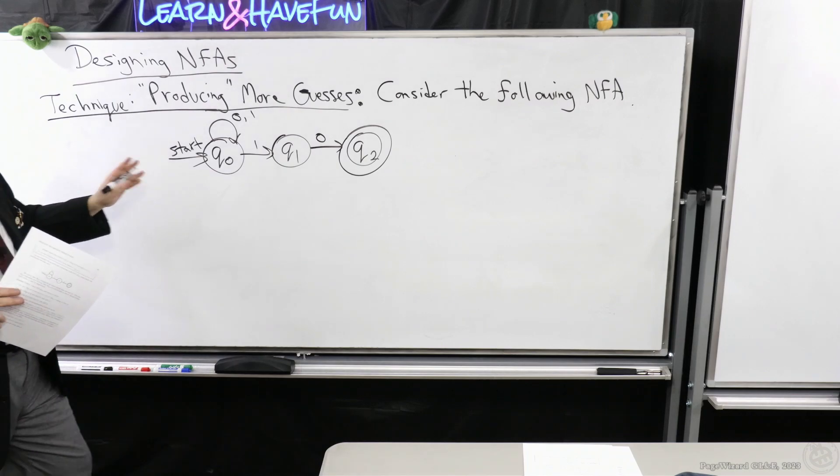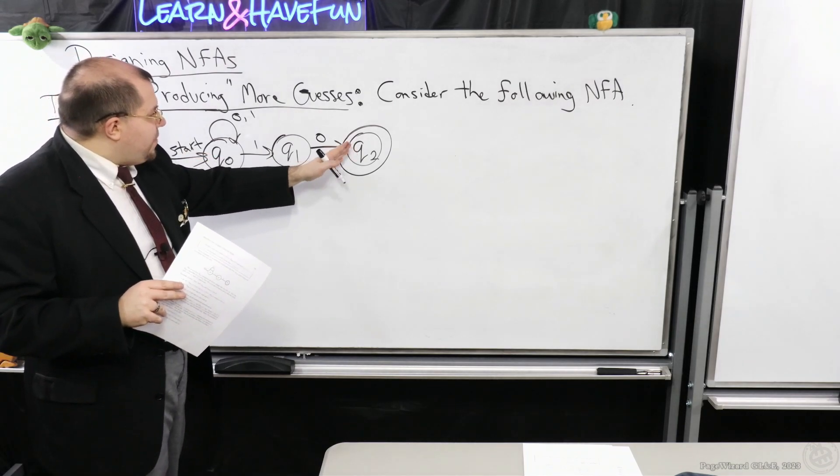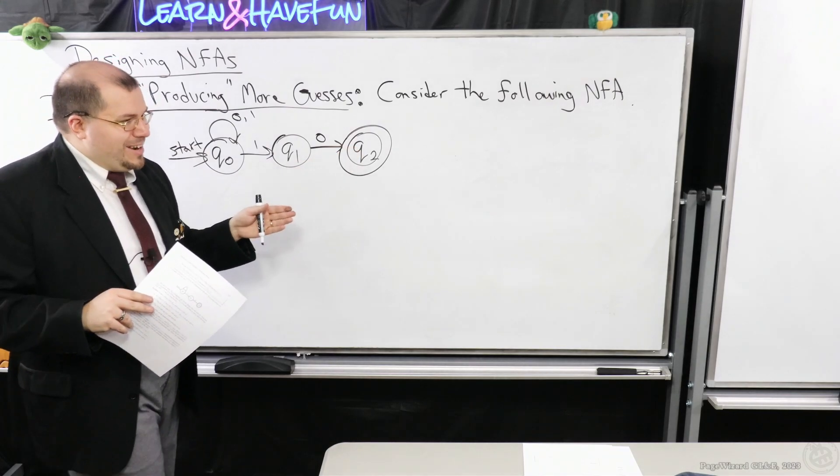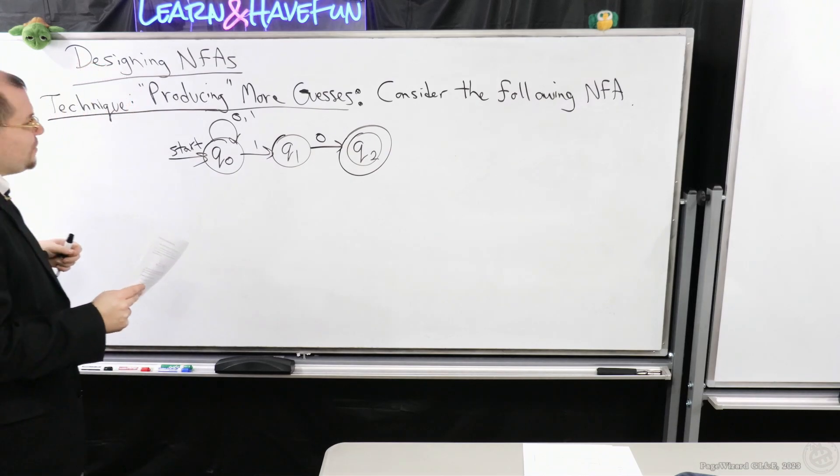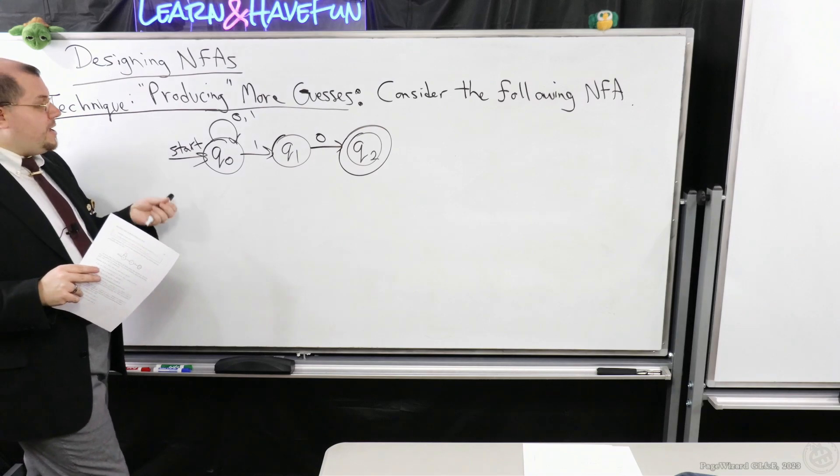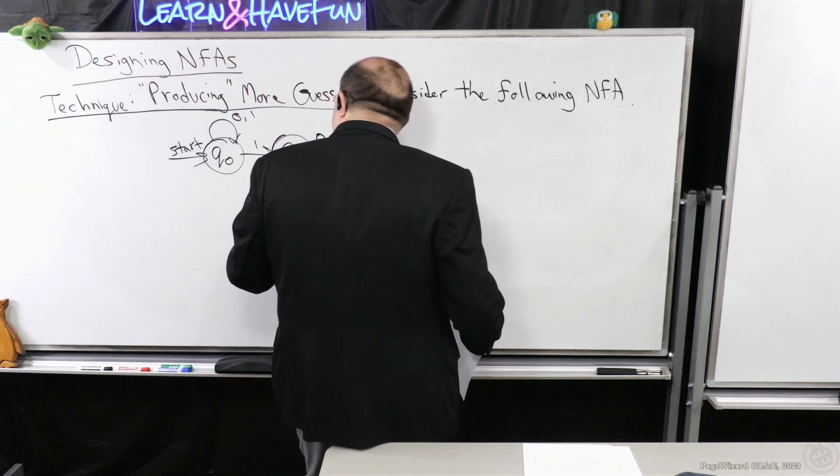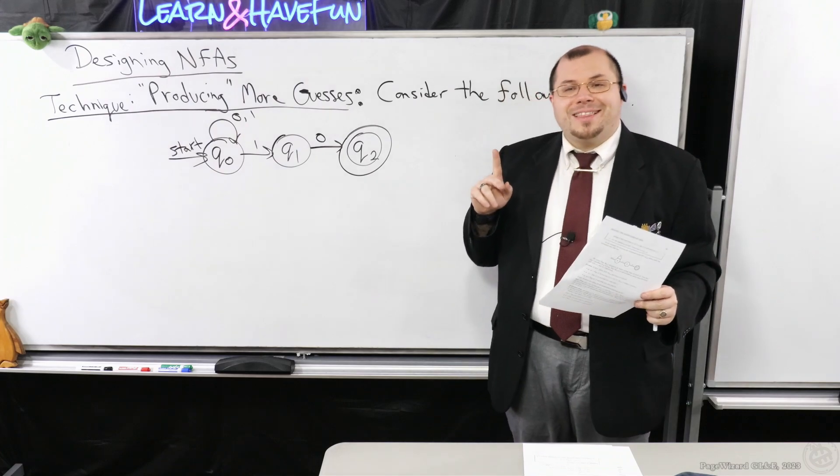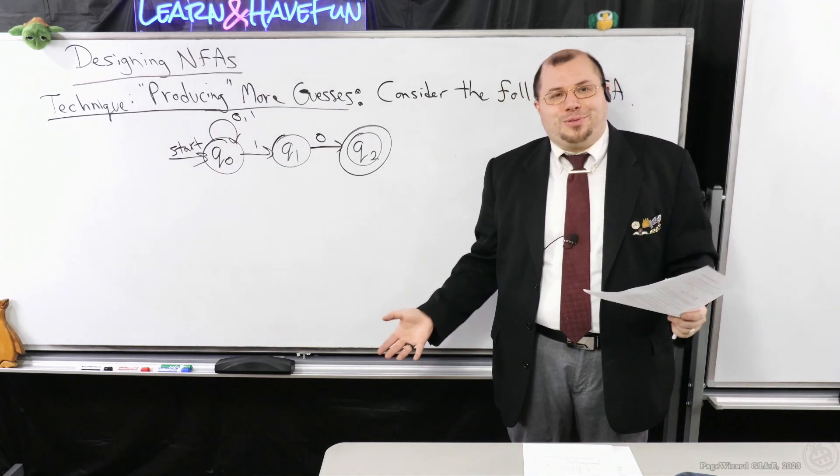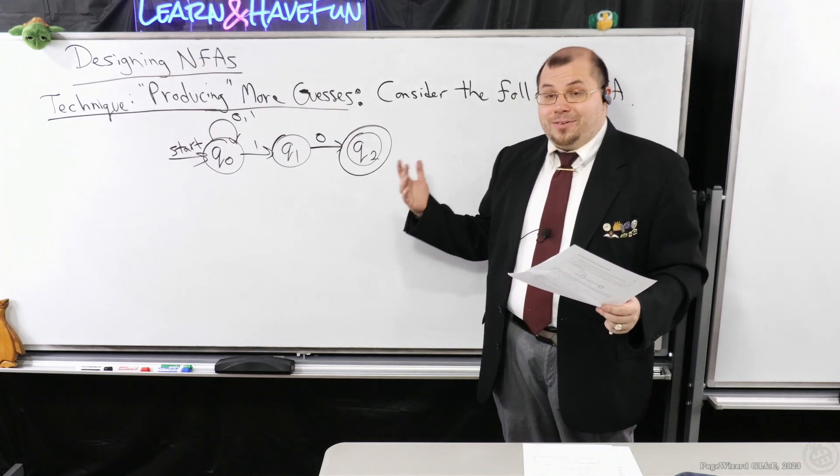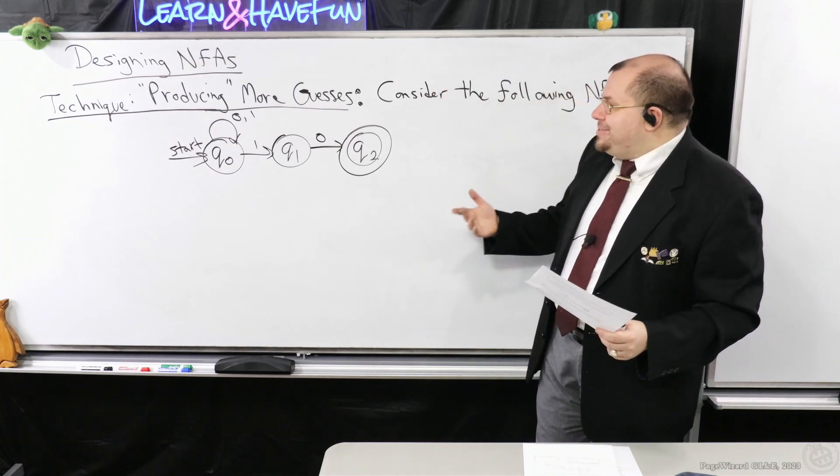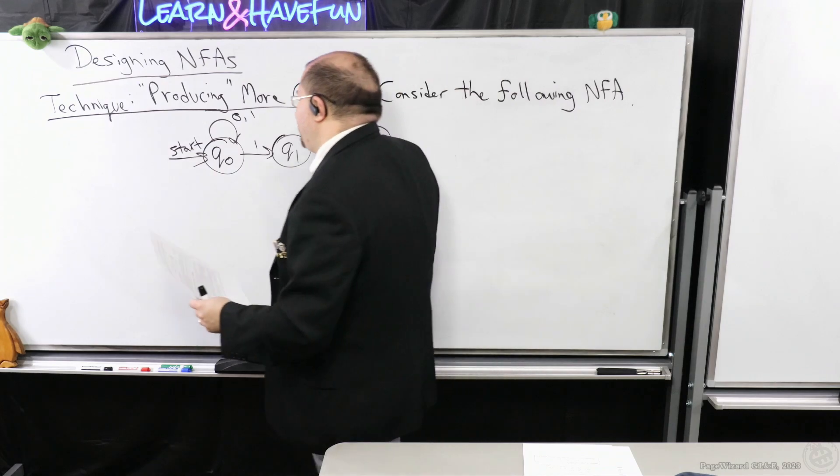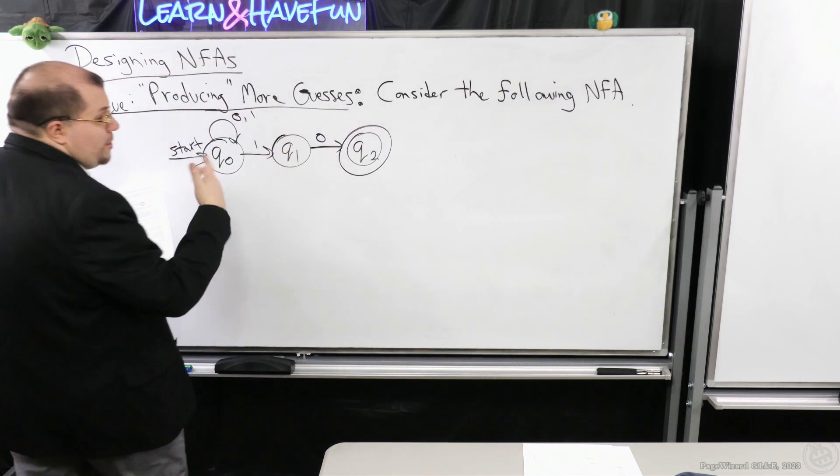So if I have three states like this, notice that if I get to Q2, if I read any more symbols after that, I'm toast, right? That thread is done. So a common technique that you can use with NFAs is that you can use self-loops akin to the one I have here on Q0 to produce more guesses. Another way of looking at this is thinking about it as spawning another thread. For which if one thread fails, it gets killed, you can use another guess to spawn another thread. For which it might successfully reach Q2 upon reading the input.